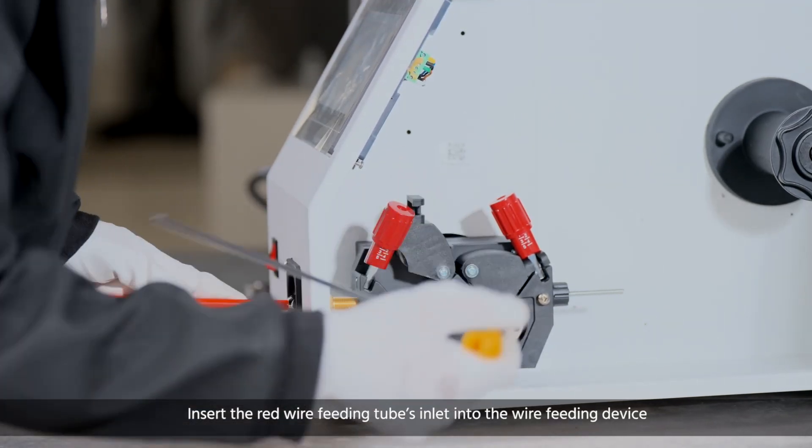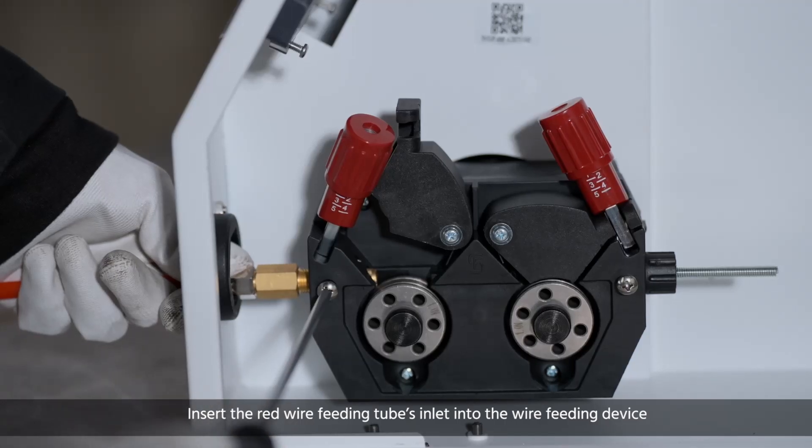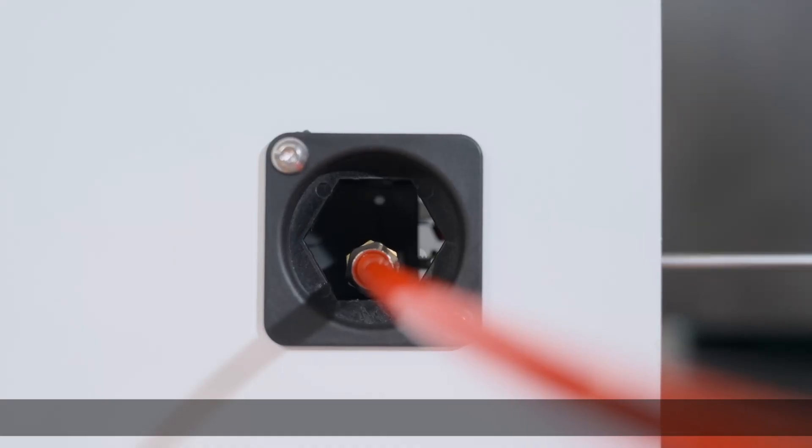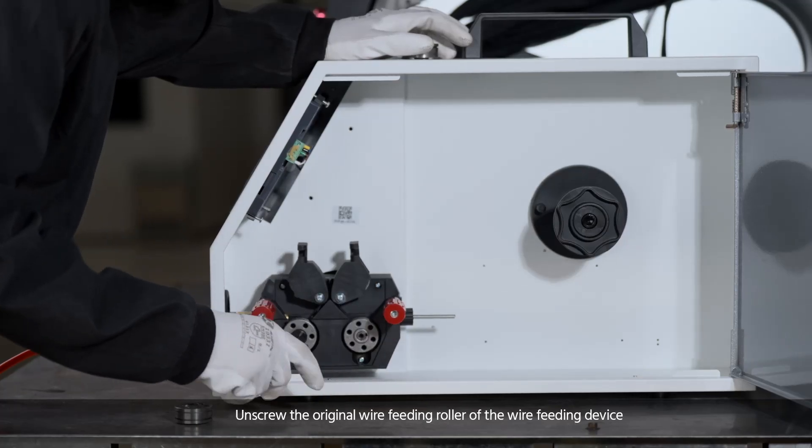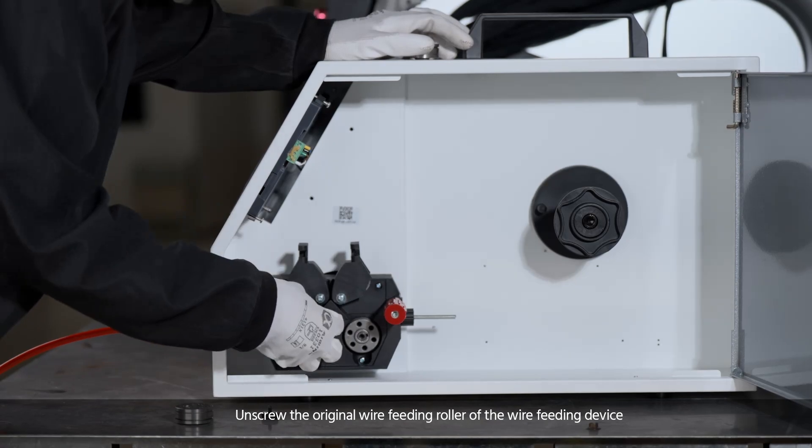Insert the red wire feeding tube's inlet into the wire feeding device. Unscrew the original wire feeding roller of the wire feeding device.